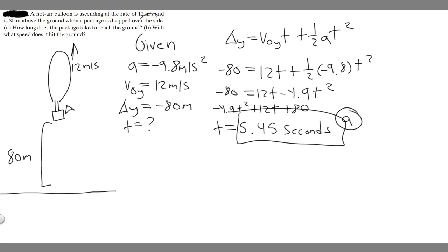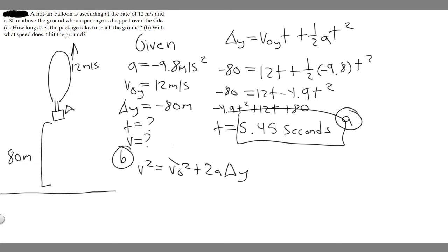Now let's move on to B: with what speed does it hit the ground? When a question asks for the speed something hits the ground, you're solving for the final velocity. We'll use the same given variables. The equation I'm going to use is v-squared equals v-sub-zero-squared plus 2a times delta y. This is probably the other most common kinematic equation. We have every variable: initial velocity, a equals minus 9.8, and delta y equals minus 80 — and we're solving for v, the final velocity.